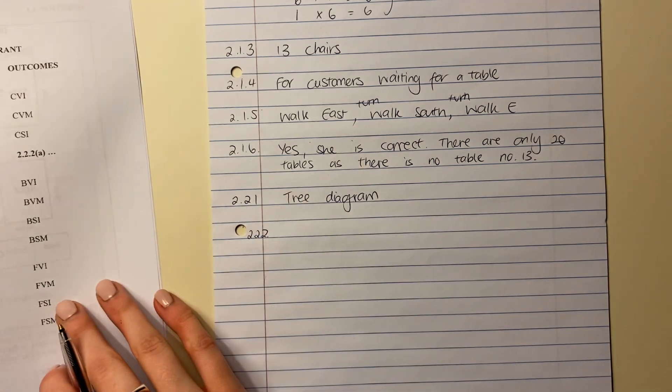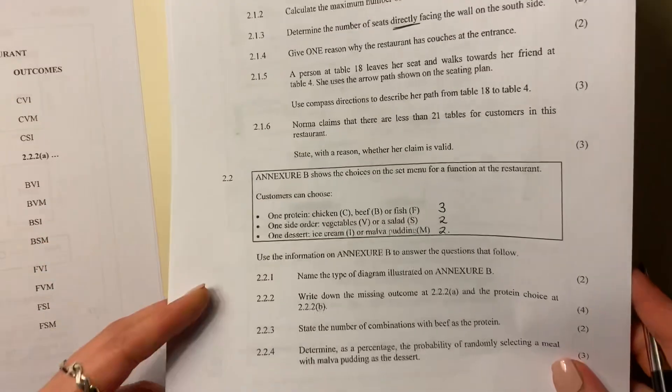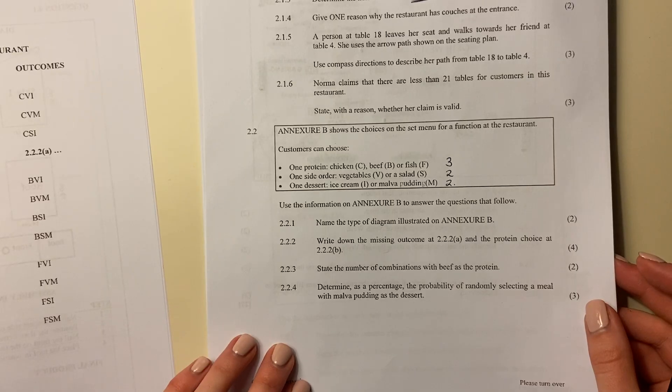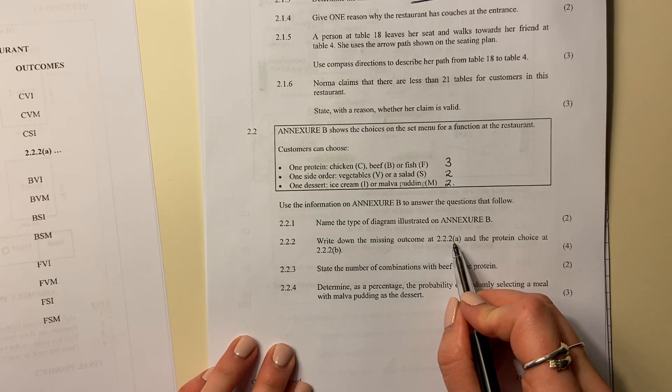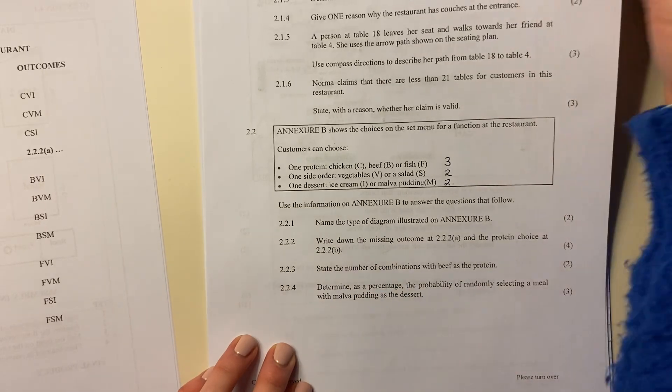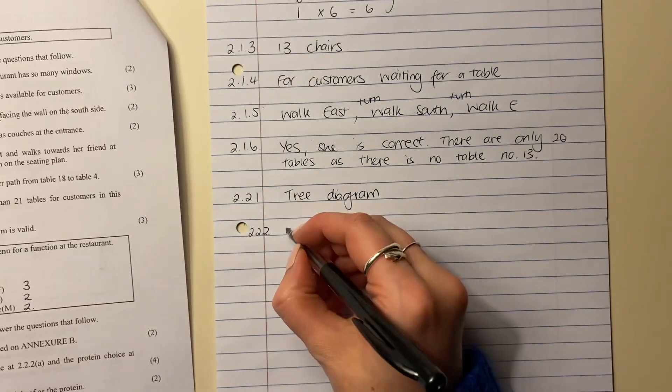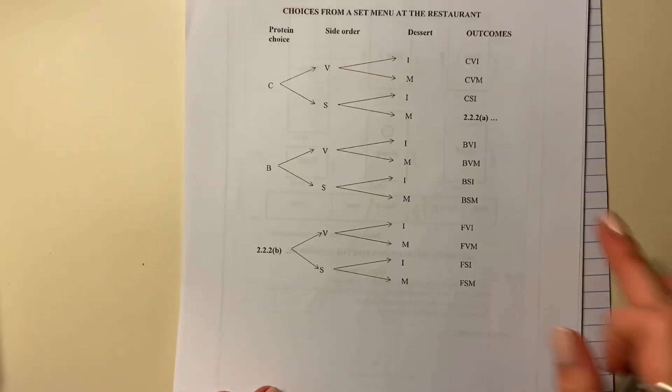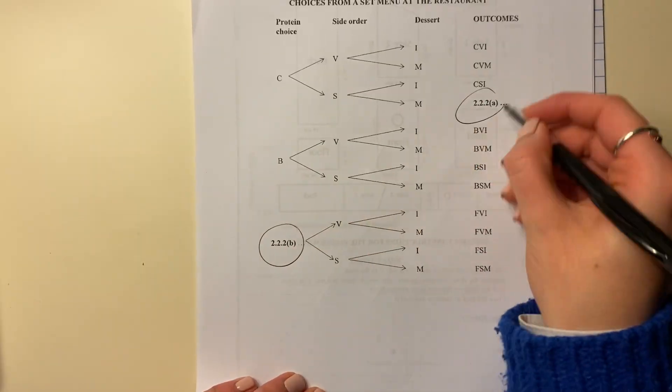We can then move on to the next question. 2.2.2. Write down the missing outcome at 2.2.2a and the protein choice at 2.2.2b. So basically, we're going to fill out these two missing points.